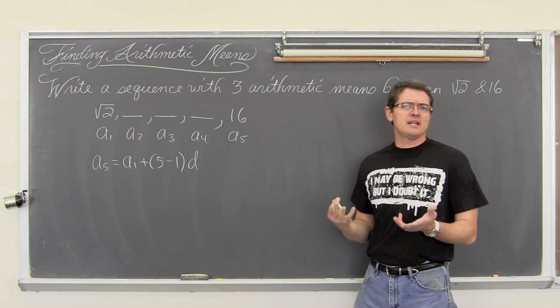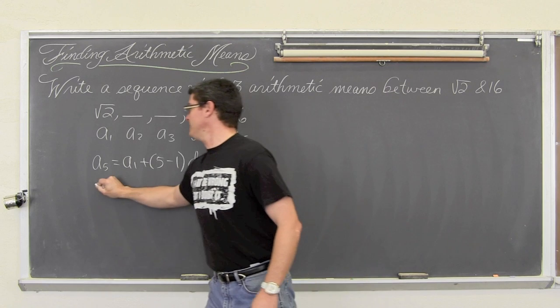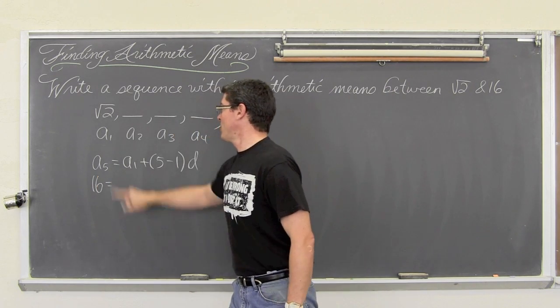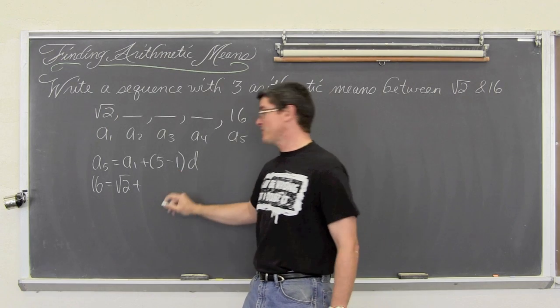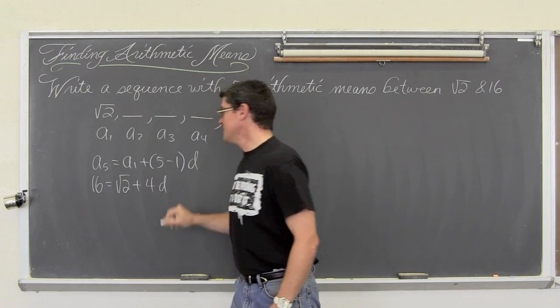Because again, n is just where you are in the sequence. a sub 5 is 16, a sub 1 is square root of 2, 5 minus 1 is 4, times d.